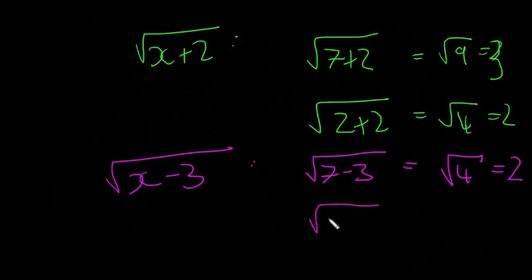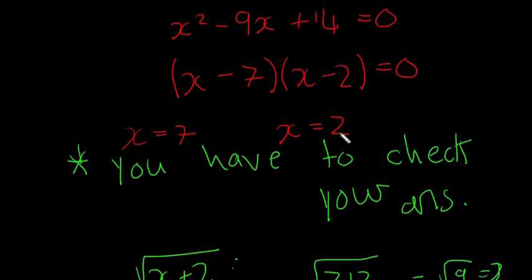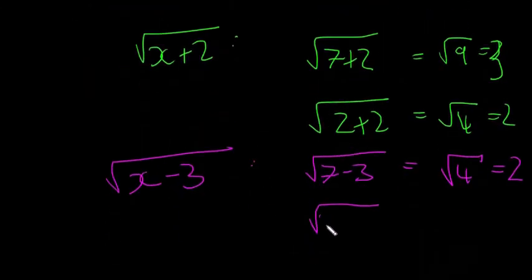This one here would have been, if x is equal to—remember one of our answers was x is equal to 2—so if we had x equal to 2 here, we'd have 2 minus 3, which is equal to the square root of minus 1, which isn't a real solution. So we'll do that again in complex numbers, but basically this is wrong.